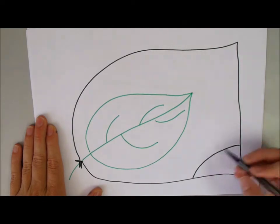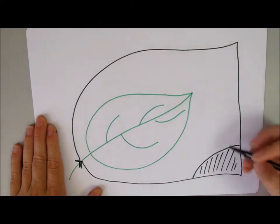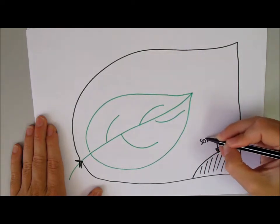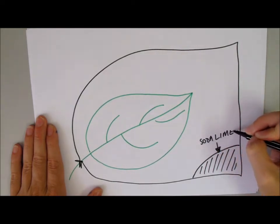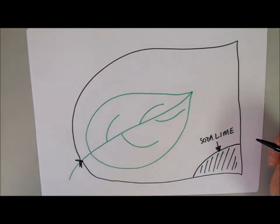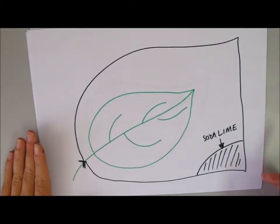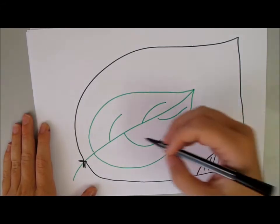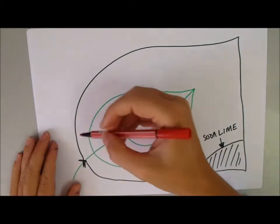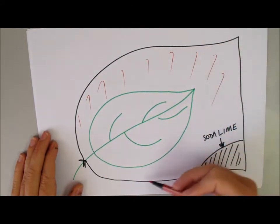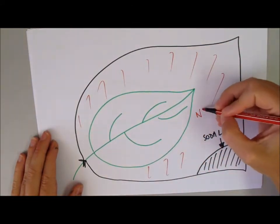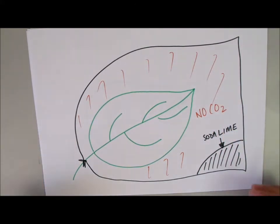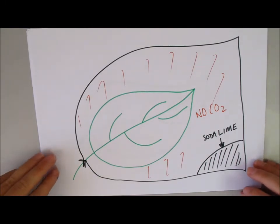The chemical soda lime will absorb carbon dioxide. So, that means that in this whole bag, there will then be absolutely no carbon dioxide. So, we'll be able to see what the effect of removing carbon dioxide from the atmosphere has.